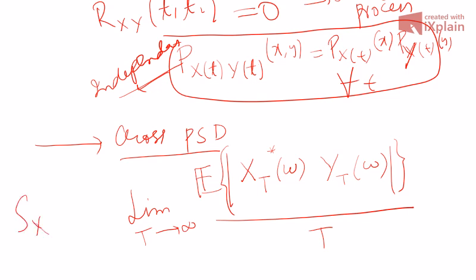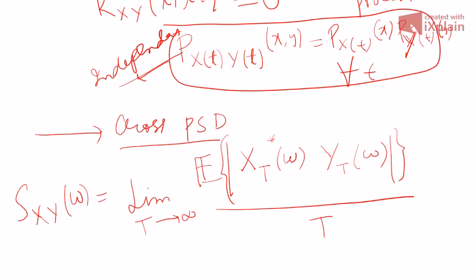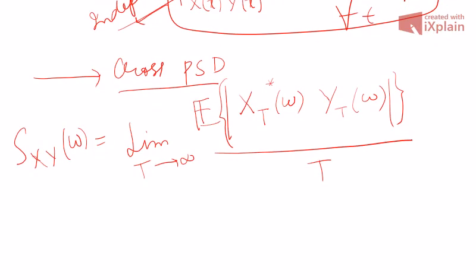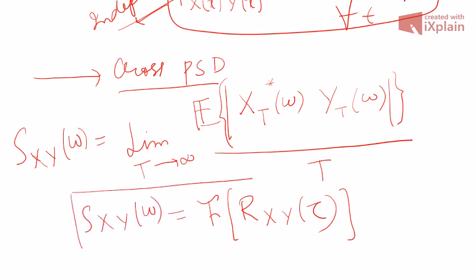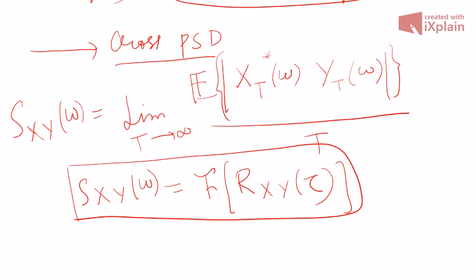The notation for cross power spectral density is S_{XY}(omega). Following the definition for single random processes, you have the cross-correlation function R_{XY}(tau) — assuming stationarity — and if you take the Fourier transform of that you get S_{XY}(omega). In the next lecture we will deal with systems wherein a random process x(T) is applied as input to an LTI system and at the output we get random process y(T). We will find what the cross-correlation and cross power spectral density are for different processes. Thank you.